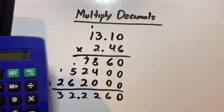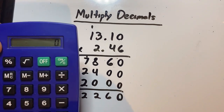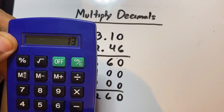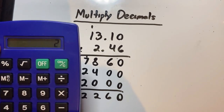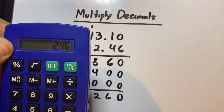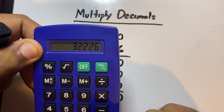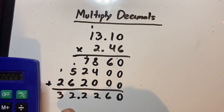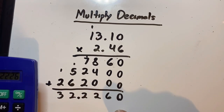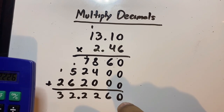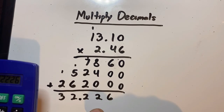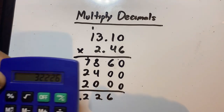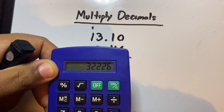Let's confirm: 13.10 times 2.46. The answer is 32.2260. Over here it's 32.2260. You don't need the zero at the end because it's a decimal, so you can erase it — it still gives the same answer: 32.226.